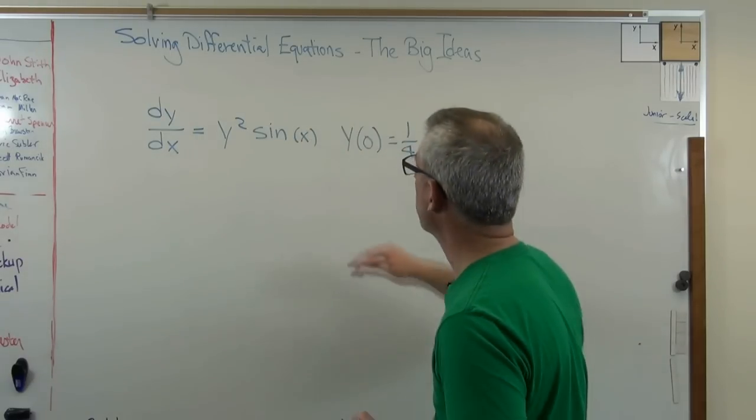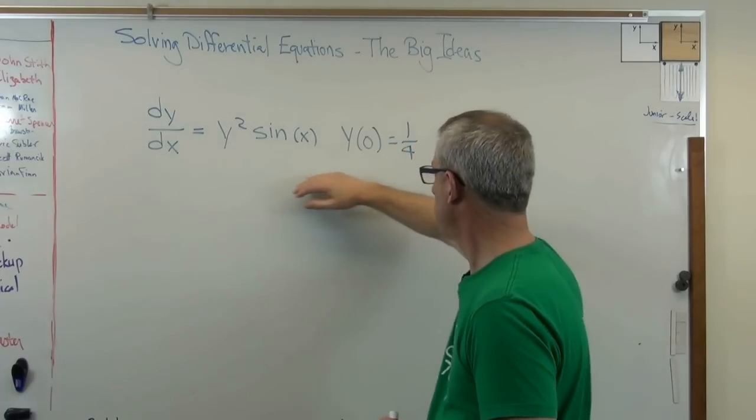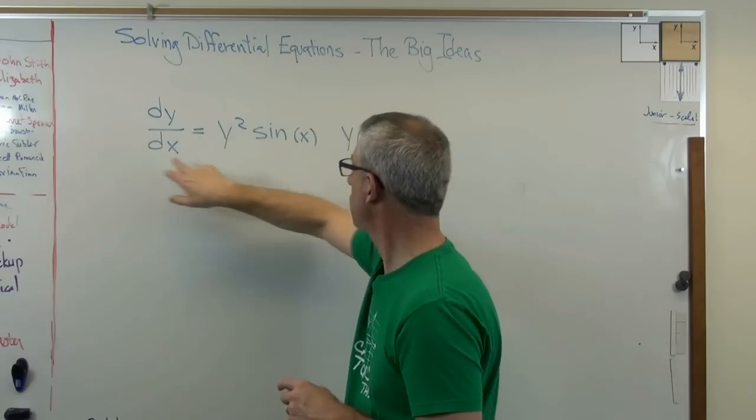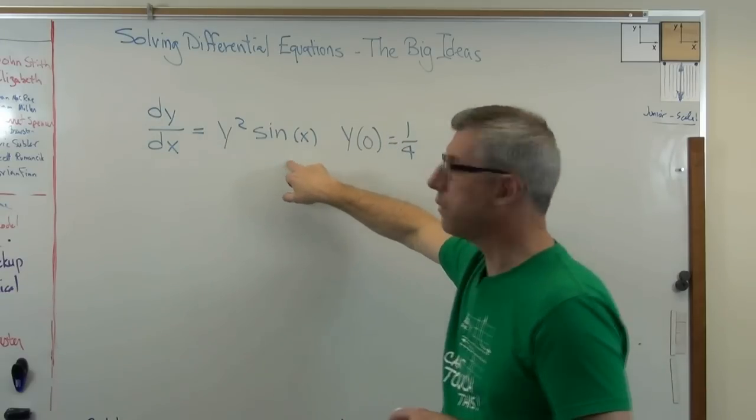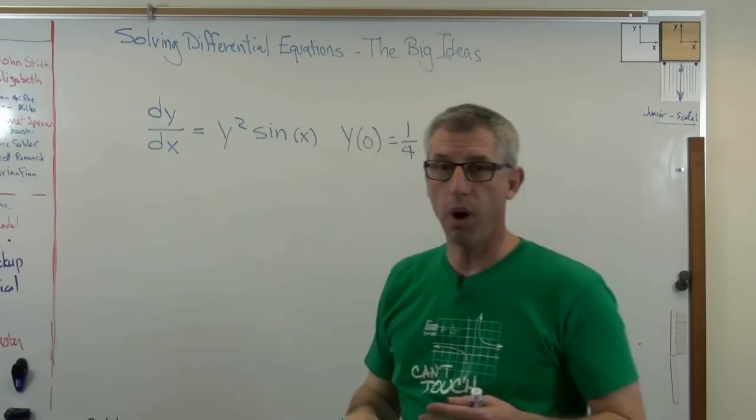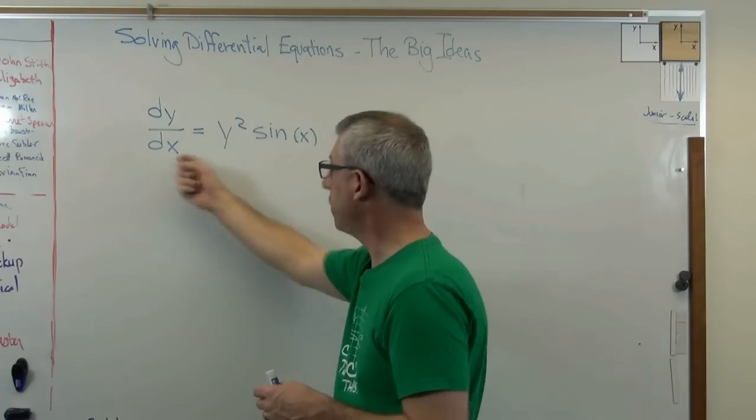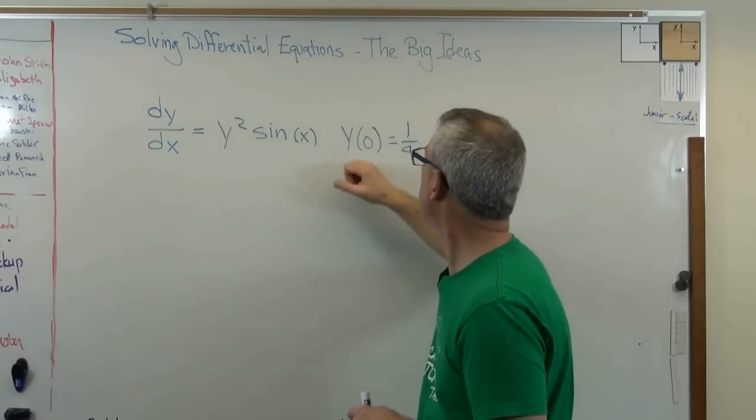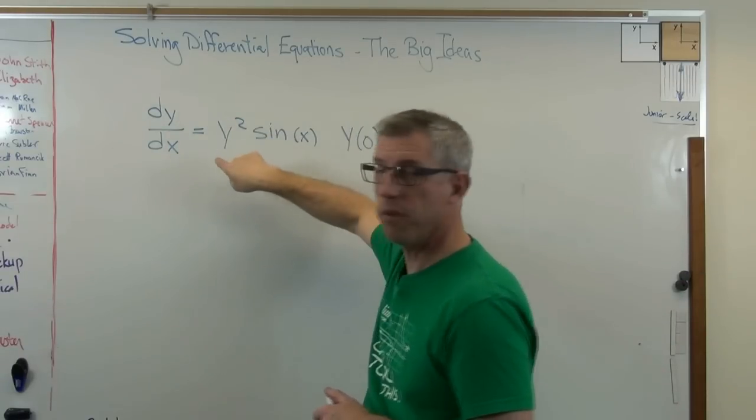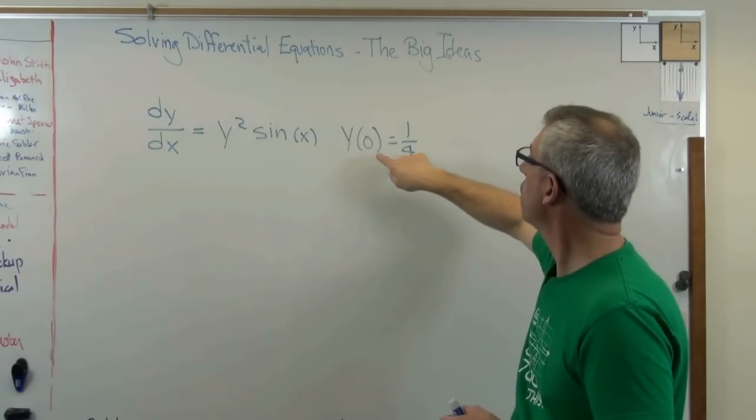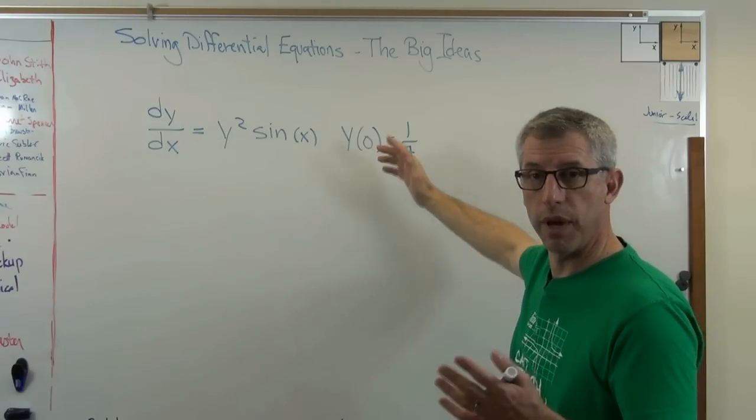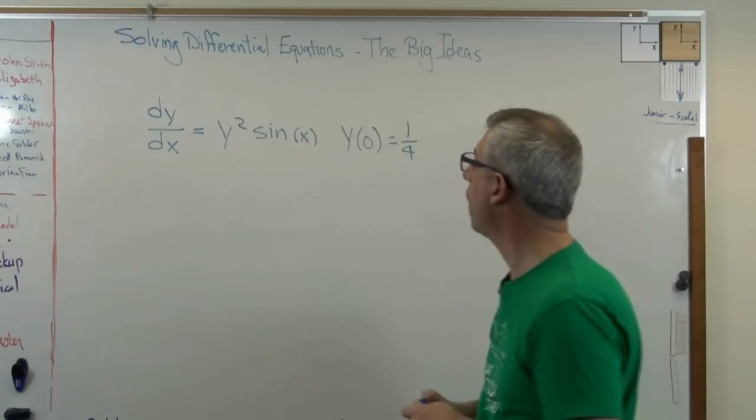So I need a differential equation to work with, so I just made this one up. This is a first-order differential equation where I've got the first-order derivative there, and I've got a very simple function on the right-hand side. Now, the goal here is to find a function y of x that when you substitute in here makes this true. Also, it has to pass through this point. So this equation right here defines a family of functions. When you pick the function that goes through that point, you've gone from a family of functions down to one specific one.